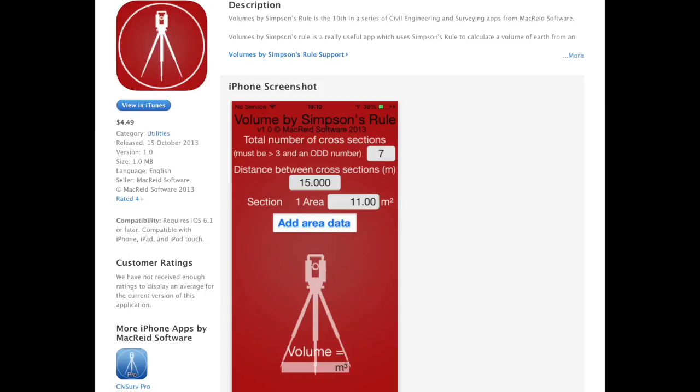This app takes the number of cross-sections you have, the area for each one, and then calculates the volume by Simpson's rule automatically.